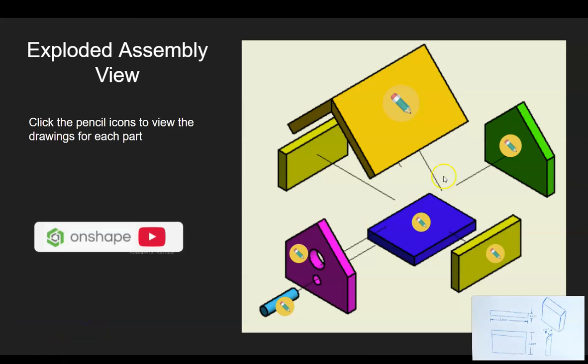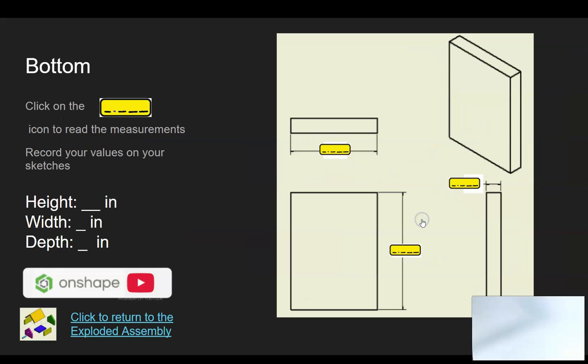We've got all of our measurements, so now we can just hit the exploded assembly button to get us back to the exploded assembly. We're ready to start the next model. Go ahead and click on the bottom, sketch the bottom view.